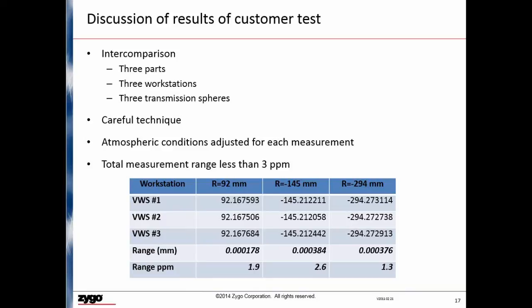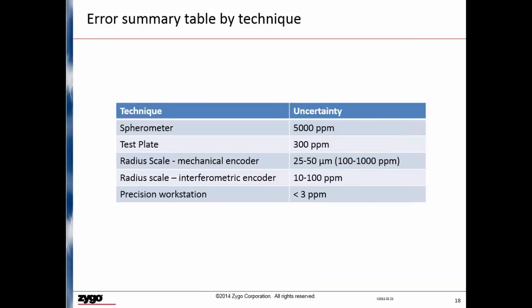To summarize in the final slide, the uncertainty of each technique is listed. We start with a spherometer at about half a percent or 5,000 parts per million, and then a test plate is going to be about 300 or 150 parts per million in that range. Then we move on to a radius scale with a mechanical encoder. The uncertainty for that is 25 to 50 microns, and that doesn't really change with the length of the test part, but assuming we have test parts in the range of 50 millimeters to a meter or so, we're talking uncertainties in the 100 to 1,000 parts per million range. The radius scale with an interferometric encoder improves on that by a factor of 10 to 100 parts per million, and finally, with a very carefully designed precision workstation, we've been able to achieve precisions on the order of 3 parts per million.